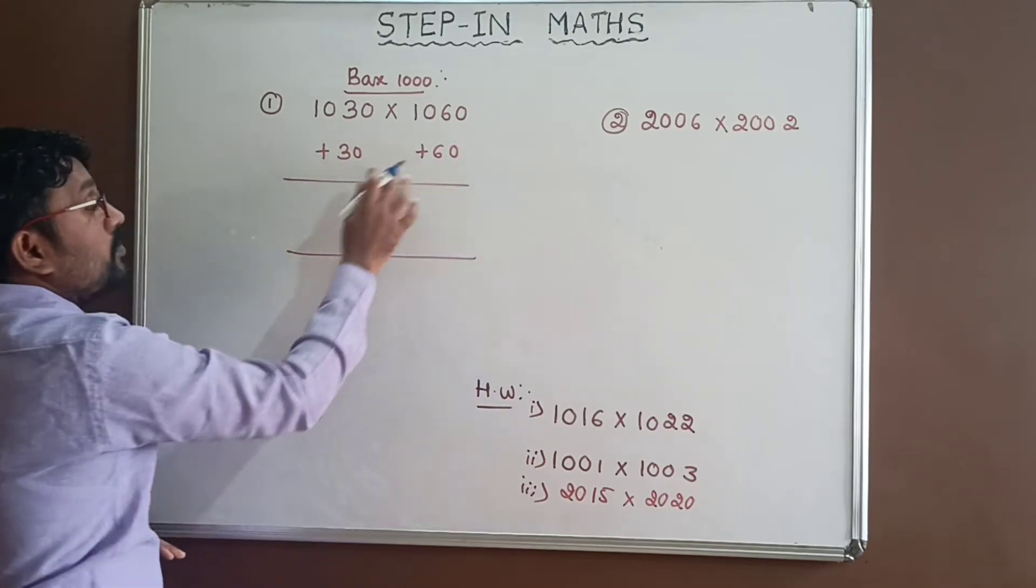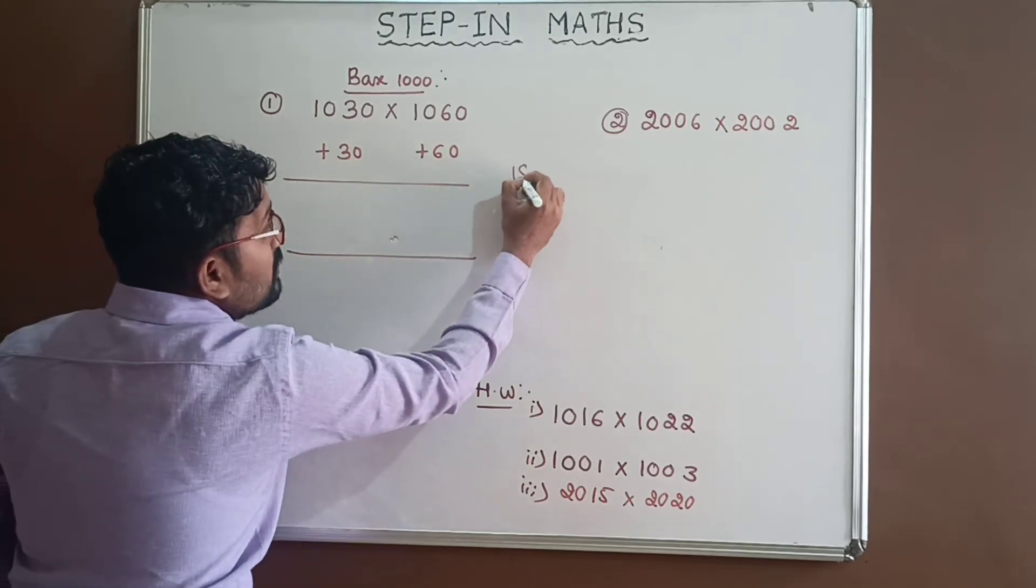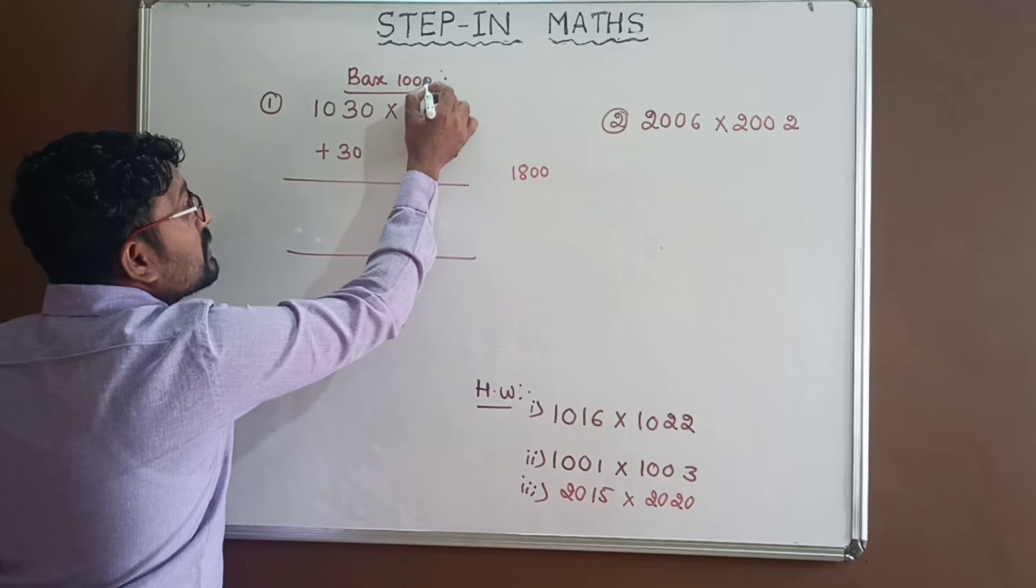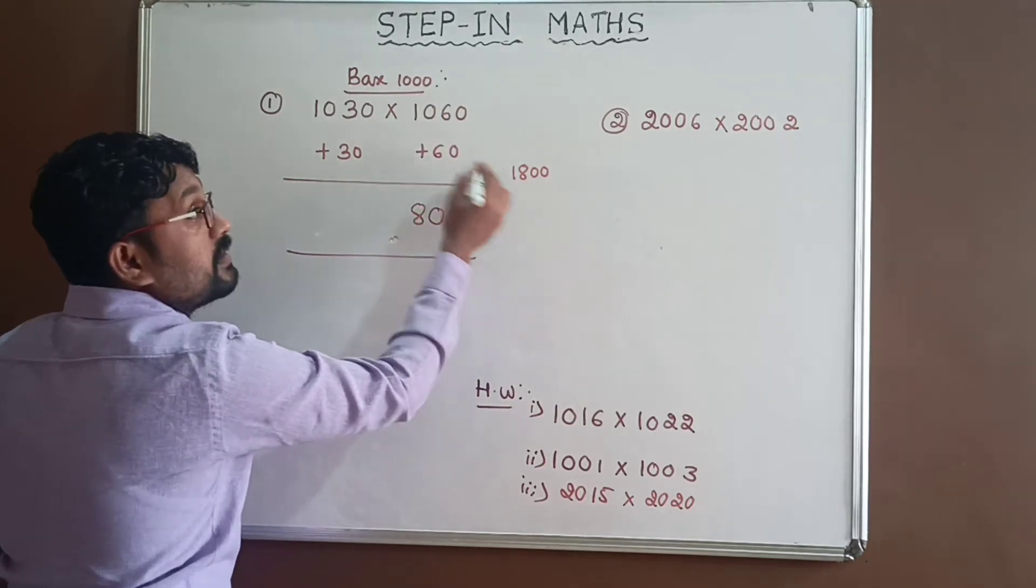When we multiply, first we need to multiply these two. 30 into 60 is equal to 1800. But since base has only 3 zeros, we should write only 3 digits, and another one is carrier.